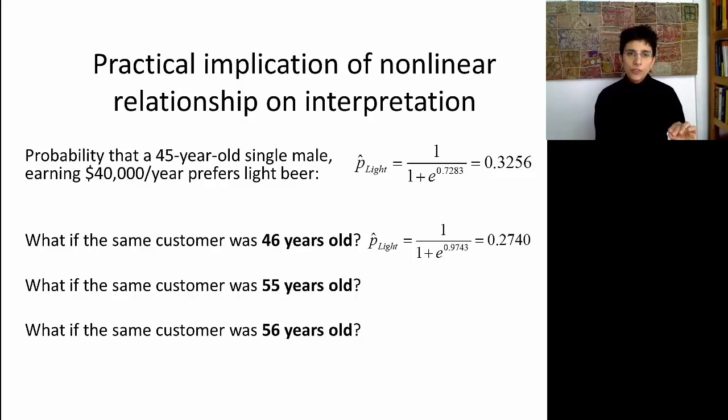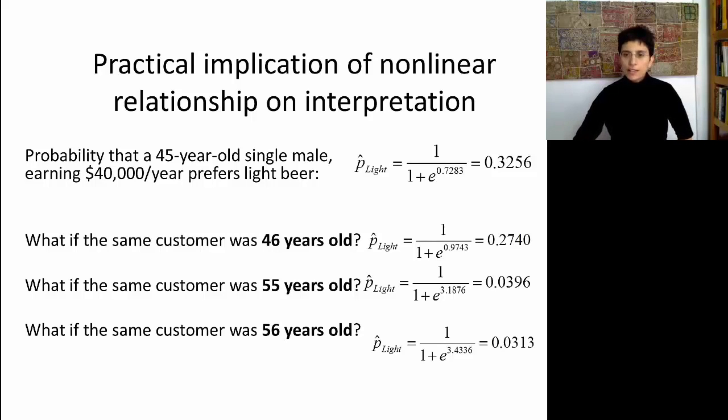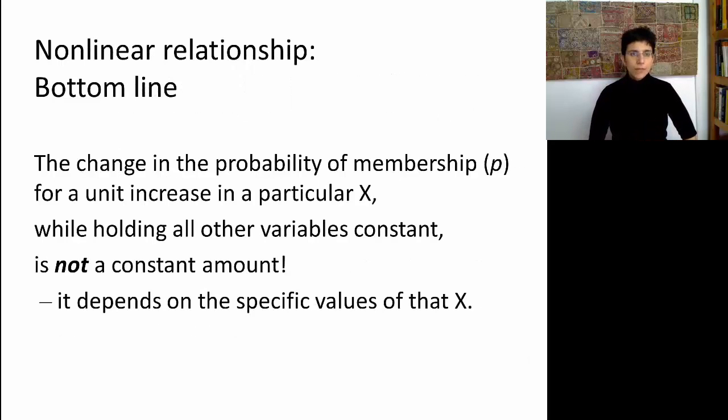Let's look at two people who have the same profiles. They're again single males earning the same $40,000 a year. And the only difference is we're going to look at two people who are 55 years old and 56 years old. And let's see what that extra year does to that probability. If you do the computation, you'll find that the gap between these two probabilities is very different compared to the gap between the 45 and 46 year old people. In other words, the effect of each predictor on the probability is different depending on what level of that predictor you're at. If you're talking about people who are 45 or 46 year olds, then the effect of age is different than it is if you're looking at older people. And that's why we cannot make general statements in terms of probability. We can only make them in terms of odds. So the bottom line is that the change in the probability of membership for unit increase in a particular x while holding everything else constant is not a constant amount.